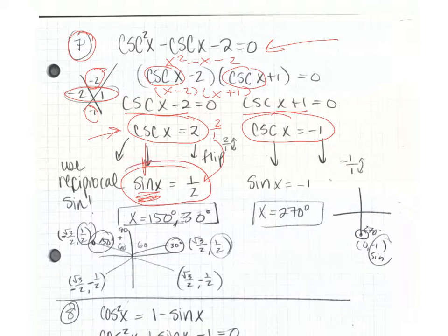So now we're going to look at the unit circle and see where the sine is a half. Similarly, if we know that cosecant and sine are reciprocals, the reciprocal of negative 1 is still negative 1. So we're also going to look on the unit circle and see where sine is negative 1.